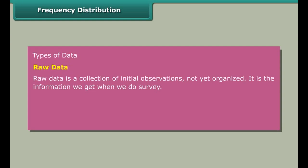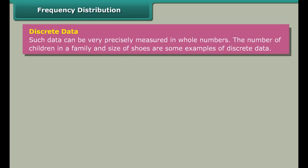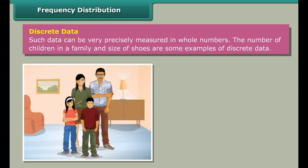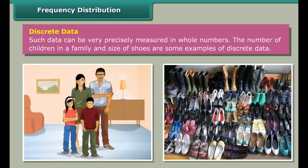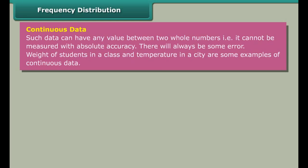Frequency distribution: Raw data is a collection of initial observations not yet organized. It is the information we get when we do survey. It can be classified into two types: discrete data and continuous data. Discrete data can be very precisely measured in whole numbers. The number of children in a family and size of shoes are some examples of discrete data.